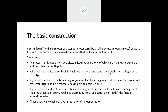The rotor poles tend to align themselves with the stator poles. The rotor itself is made from two discs, a little like gears — one of which is a magnetic north pole and the other is a south pole. Other motors have a single fixed rotor, but in this case it has two discs. When we put our hands together the fingers make the gear teeth; the north and south poles alternate.